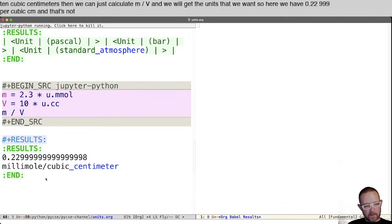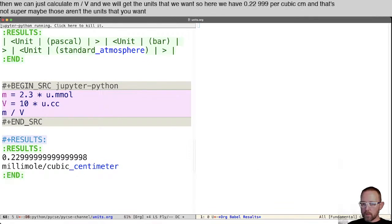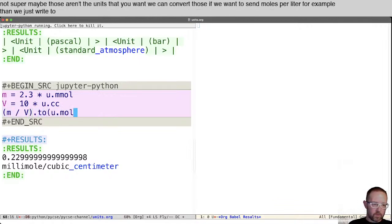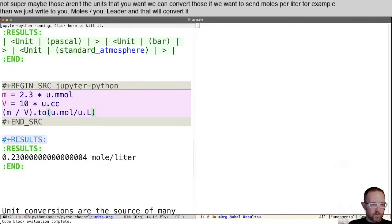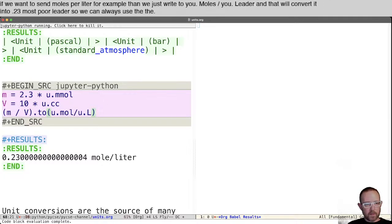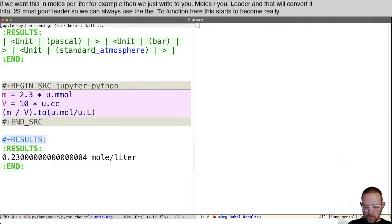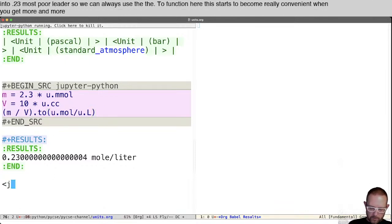If we want this in moles per liter, for example, then we just write dot two u dot moles divided by u dot liter, and that will convert it into 0.23 moles per liter. So we can always use the dot two function here. This starts to become really convenient when you get more and more of these variables.